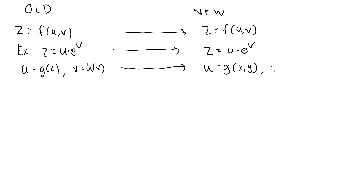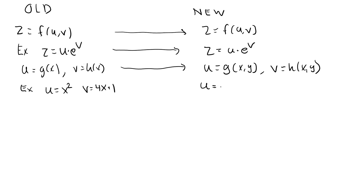The same goes for v, which is now allowed to be a function of two variables. In my previous case, I used u equal to x squared and v equal to 4x plus 1. In my new scenario, u can depend on both x and y, so let's use u equal to y times x squared, while v is equal to x plus 2y.